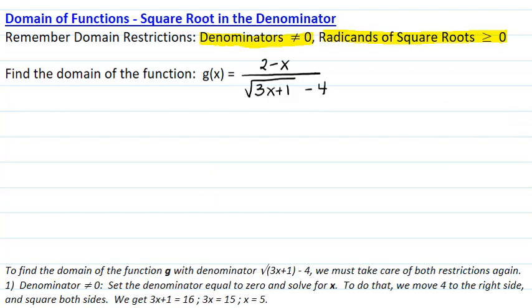To find the domain of the function g with denominator the square root of 3x plus 1 minus 4, we must take care of both restrictions again.